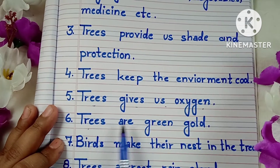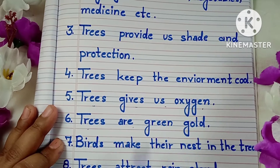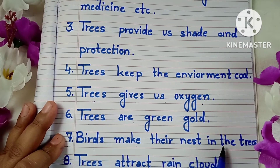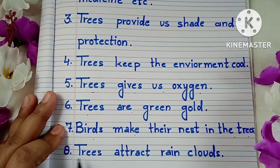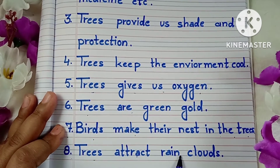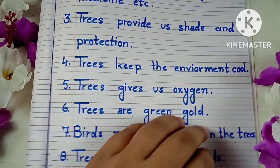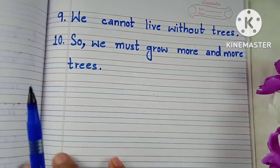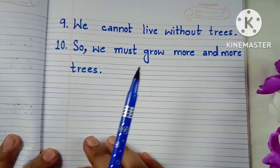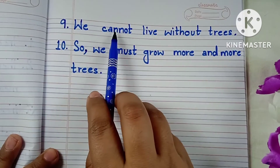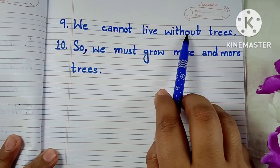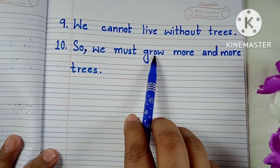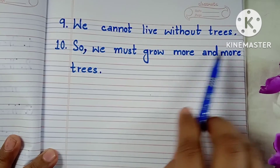Number 6: Trees are green gold. Number 7: Birds make their nest in the trees. Number 8: Trees attract rain clouds. Number 9: We cannot live without trees. Number 10: So, we must grow more and more trees.